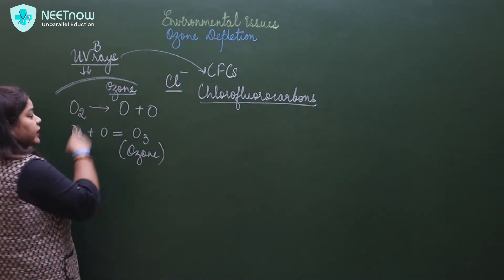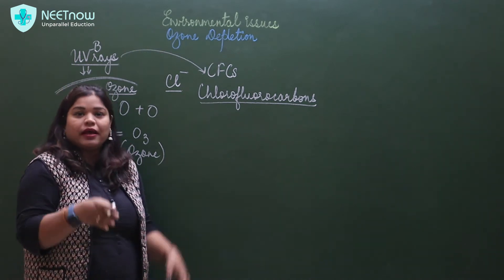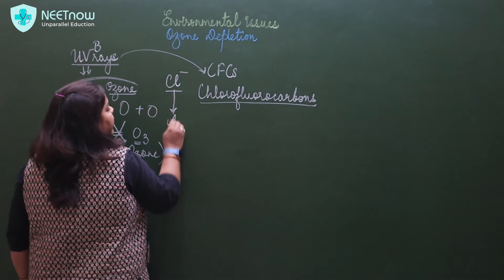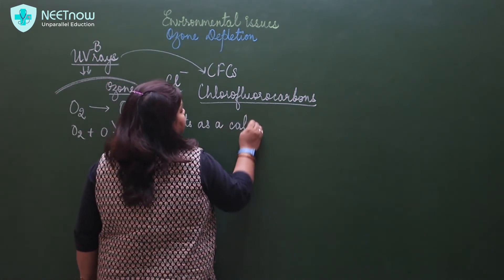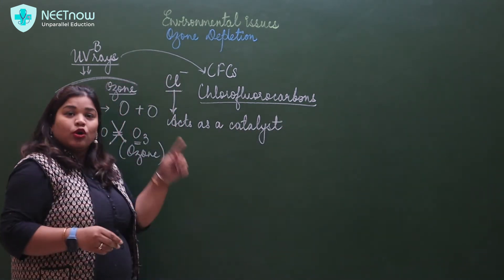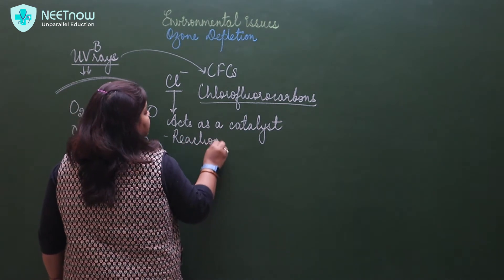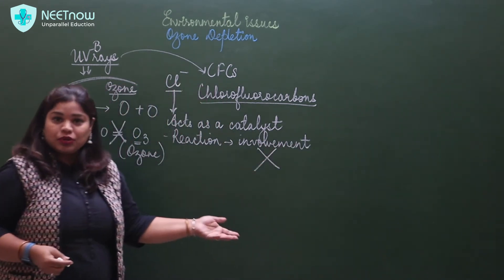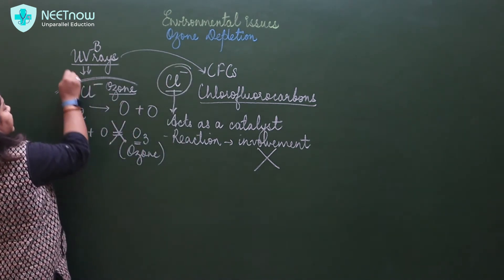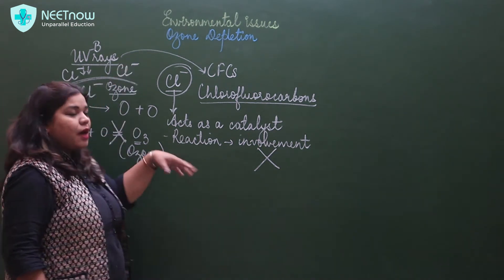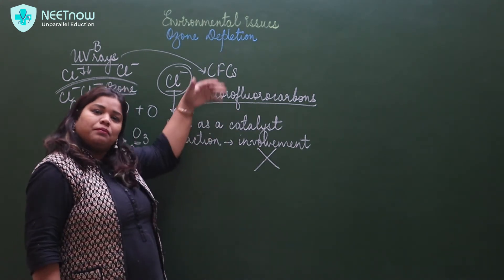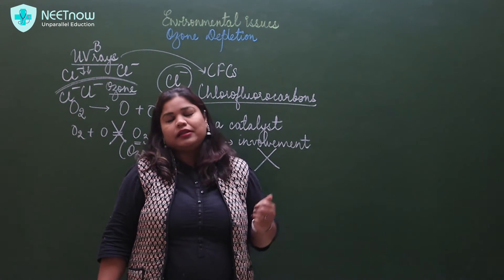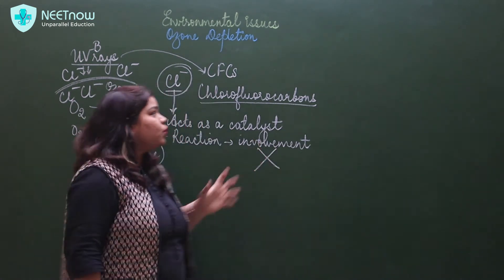Chlorine atoms act as a catalyst and have been very problematic. It became a major problem in Antarctic, which was the formation of the ozone hole.